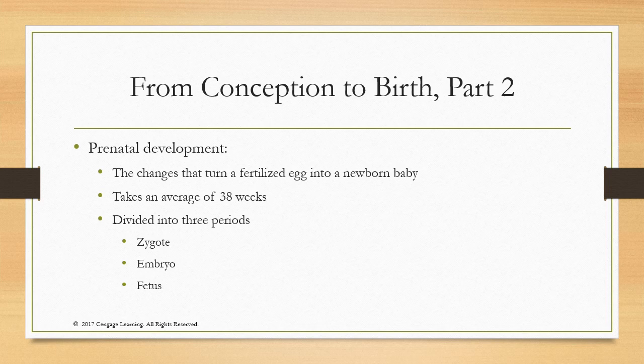You'll want to understand what the zygote, embryo, and fetus periods are. The zygote is the fertilized egg — it ends when the zygote implants in the wall of the uterus, which is the first two weeks. Once implanted, it becomes an embryo. The embryo phase is when specialization of cells occurs. The fetus is the final and longest stage — this is where the baby grows and develops everything already specialized.